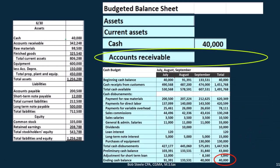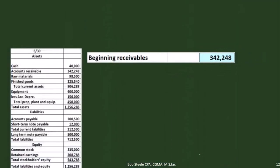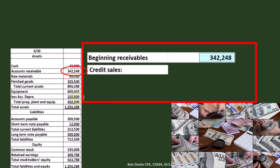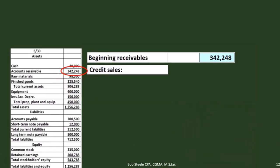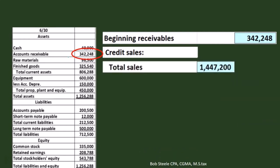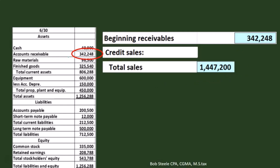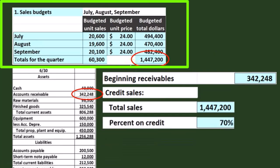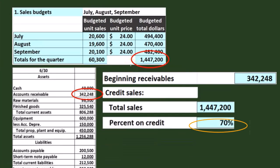Then we've got the accounts receivable. We're going to have to do a bit of a calculation to figure out what the ending balance in accounts receivable is. We're going to take the beginning receivable, which comes from last period's balance sheet at $342,248. Then we're going to add the credit sales. The problem said we have $1,447,200 in sales given by the sales budget, and 70% of that was going to be on account. Those are sales that are going to increase accounts receivable.